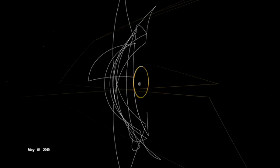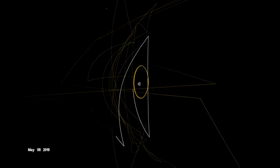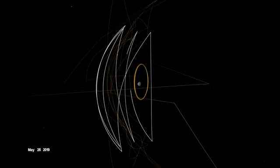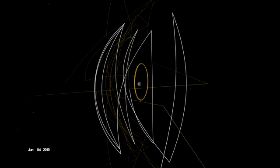During the detailed survey, OSIRIS-REx globally mapped Bennu at only 5 centimeters per pixel, the highest resolution of any planetary body, including Earth.